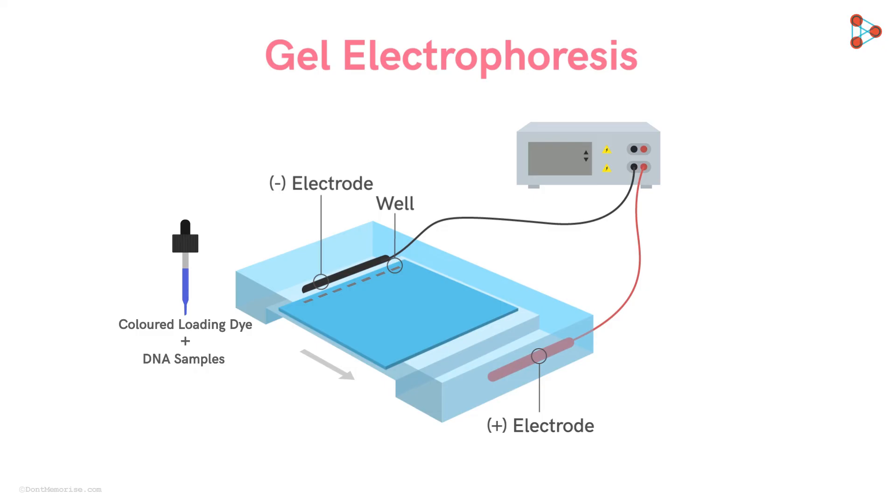But before loading the DNA mixture, we will fill the apparatus with a buffer as shown. The buffer is used to provide better conductivity of electricity. Next, we will load the DNA mixture into the wells and we are ready to turn on the power supply.